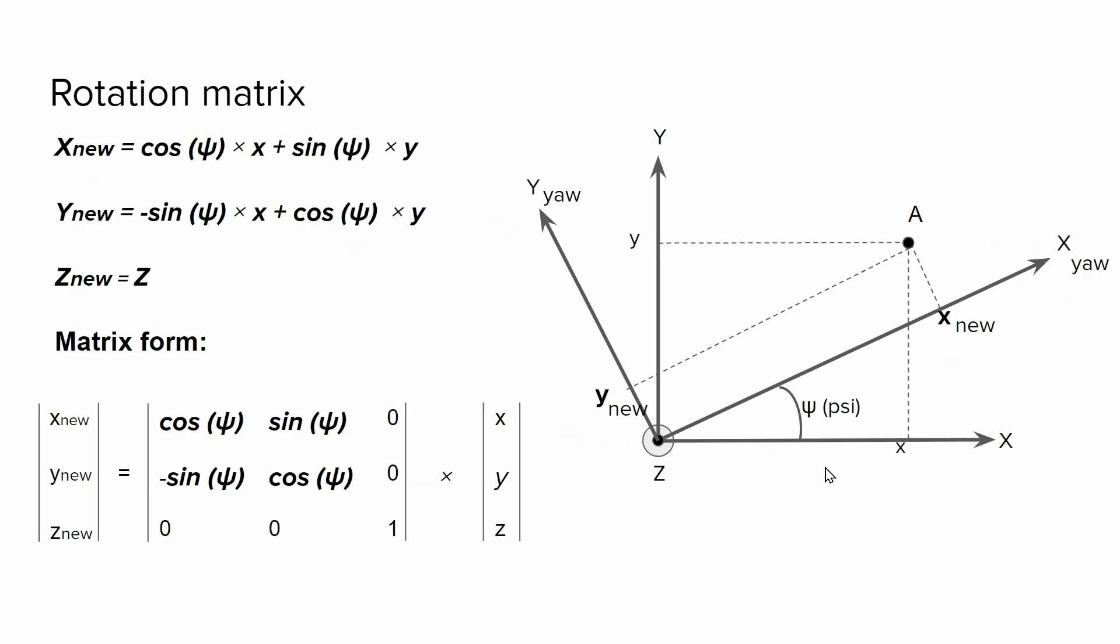Using the simple geometry, we can identify X new and Y new using these equations. Z component stays unchanged because we do rotation around Z axis. We can go further and encapsulate all these equations as just one matrix. So using this matrix, we can map the position of this point with respect to the inertial frame to the position with respect to this newly created frame.